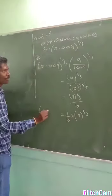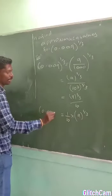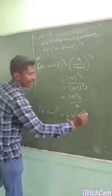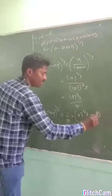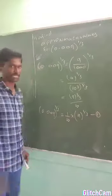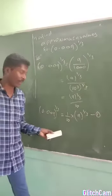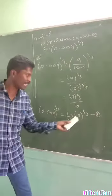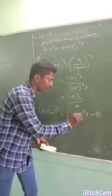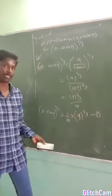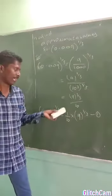So the value we need to approximate is 0.009^(1/3), which we have reduced to (1/10) · 9^(1/3). We will now go and find an approximate value for 9^(1/3).